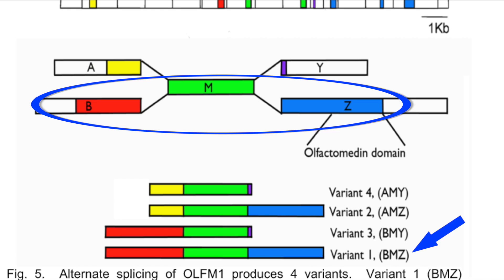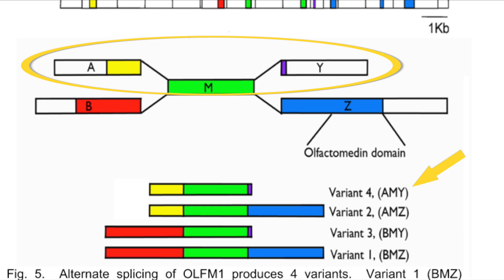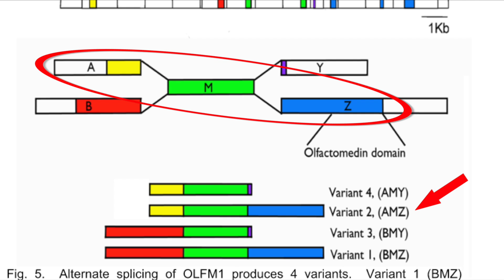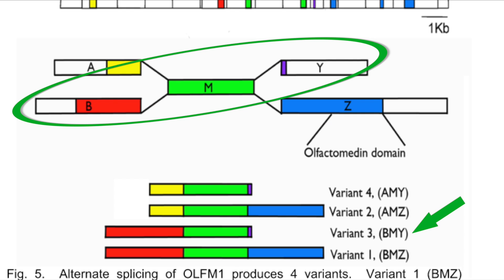Variant 1 is the longest isoform, BMZ. It was found to induce additional neural crest cells into the embryo, a process which includes EMT. Variant 4, AMY, is the shortest and inhibits neural crest formation. Variant 2 is AMZ, and Variant 3 is BMY.